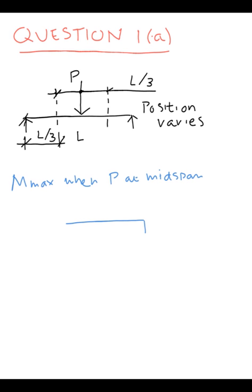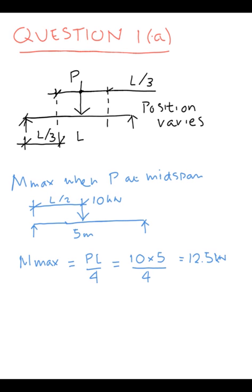You set up the beam. It's L over 2 is the distance. It's 10 kN. The span is 5 meters, that's L. Maximum moment is PL over 4 which is 10 times 5 over 4 which gives you 12.5 kilonewton meters.